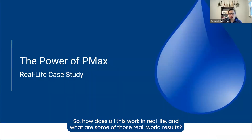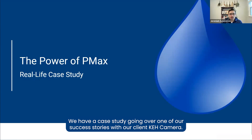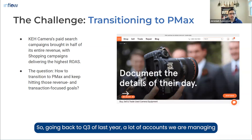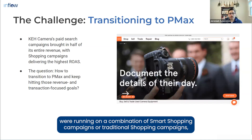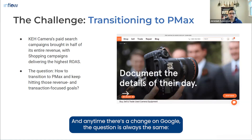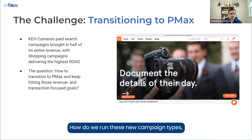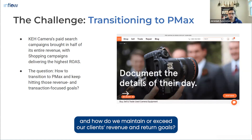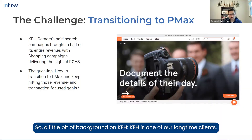Now for some real-world results — we have a case study on one of our success stories with our client KEH Camera. Going back to Q3 of last year, many accounts we were managing were running on a combination of smart shopping campaigns or traditional shopping campaigns using smart bidding or manual CPC bidding strategies. Anytime there's a change on Google, the question is always the same: how do we run these new campaign types and maintain or exceed our client's revenue and return goals?